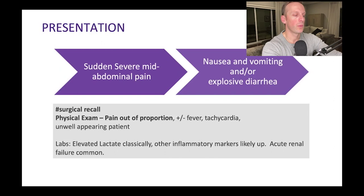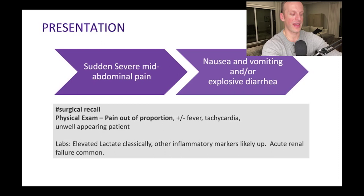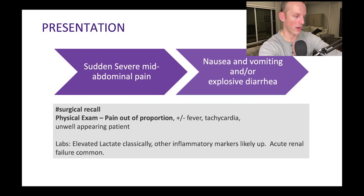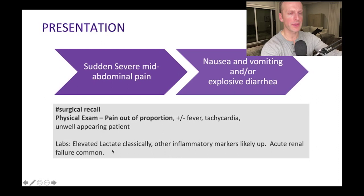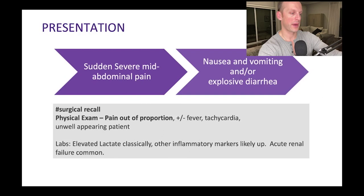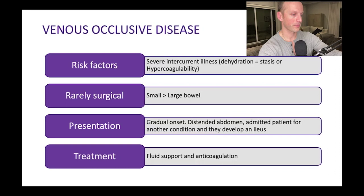How does arterial ischemia present? Severe, sudden abdominal pain — usually mid-abdominal — is the classic presentation, possibly progressing to nausea, vomiting, or explosive diarrhea. The most classic feature is pain out of proportion to physical examination: terrible abdominal pain yet minimal or no peritoneal signs on exam. They'll also have fever, tachycardia, and appear unwell. Labs show elevated lactate, metabolic acidosis, and acute renal failure — findings consistent with severe acute arterial occlusion.